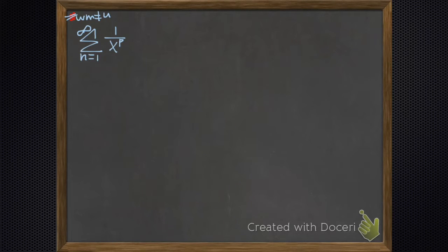To prove the convergence of a p-series, we have the sum from n=1 to infinity of 1 over n to the p. That should have been an n, not x.